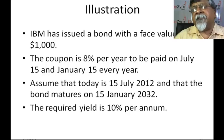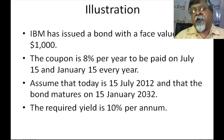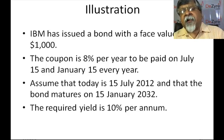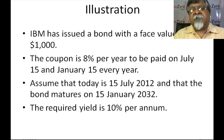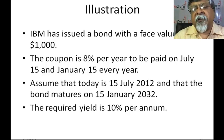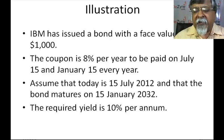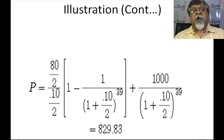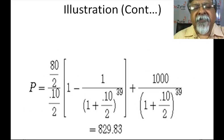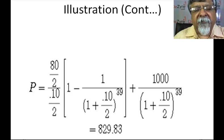So IBM has issued a bond with a face value of $1,000. Coupon is 8% per year to be paid on July 15 and January 15 every year. That is, today is a coupon date and a coupon has just been paid this morning. And the bond matures on 15 January 2032. Between 15 July 2012 and 15 January 2032, there are 39 coupon dates. The required yield is 10% per annum. So how do we value it? Find the present value of the annuity and the present value of the lump sum.